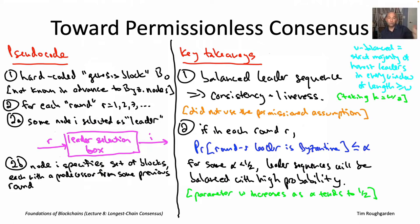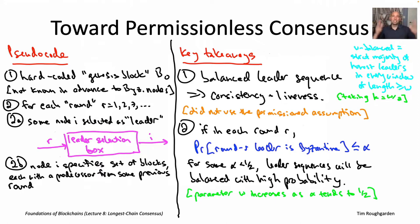The other part of the analysis was in video four of lecture eight. There we asked: if you happen to have a balanced leader sequence, you're done — but why should you have one? In that fourth video, we studied to what extent you get balanced leader sequences if you pick one node uniformly at random. In the permissioned setting, that made sense. The main result: as long as a strict majority of the nodes are honest, then for sufficiently large W, you will generate a W-balanced leader sequence except with very small failure probability.